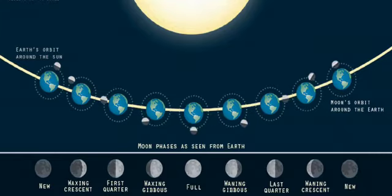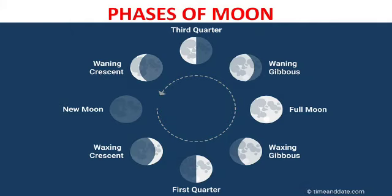On Earth, our view of the illuminated part of the moon changes each night depending on where the moon is in its orbit around Earth. There are eight moon phases.